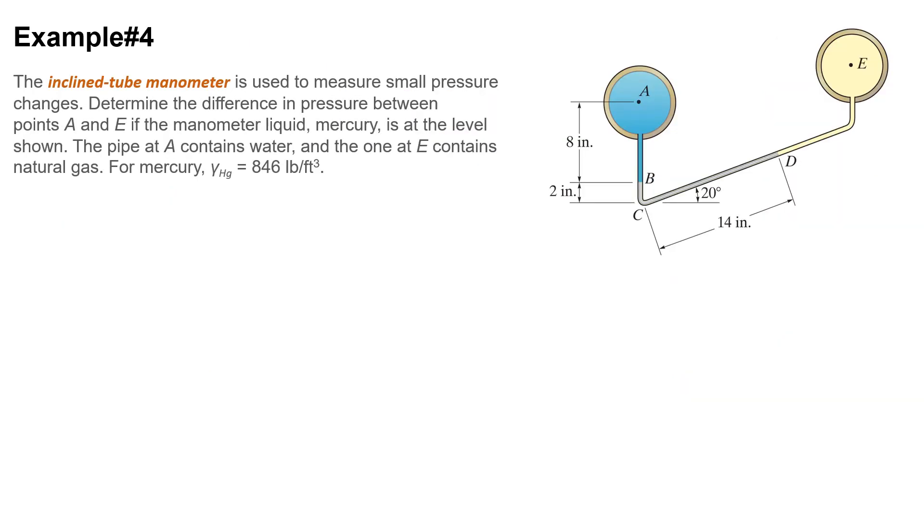In this example, we have an inclined tube manometer, and we are going to use that to find out the difference in pressure between points A and E. Point A is in a tank full of water and point E is the center of a tank full of natural gas. One thing before we start: whenever we have a system consisted of a liquid and a gas, because the gamma or specific weight of liquid is way way higher than specific weight of gas, we assume that the gamma of gas is almost zero.